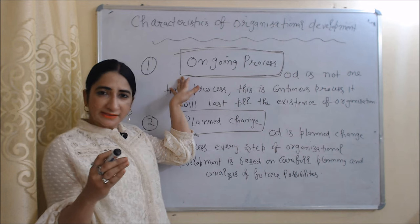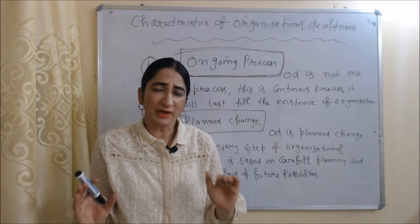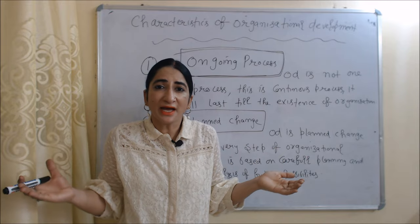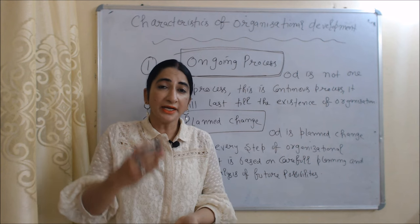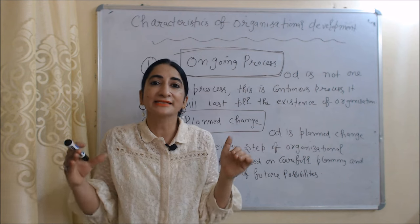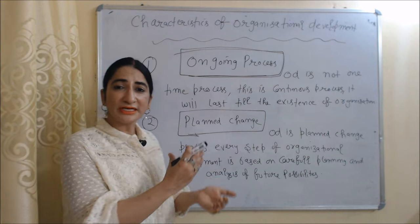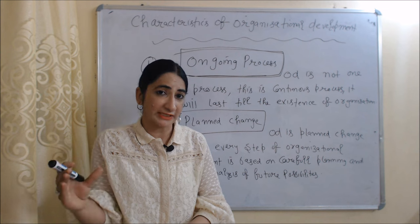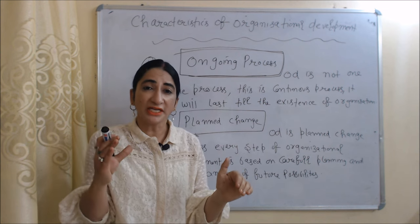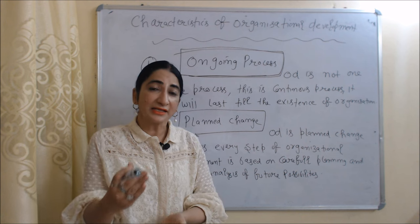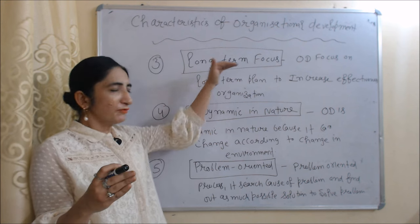The first characteristic of organizational development is that it is an ongoing process — not a one-time task, but a continuous process that lasts until the existence of the organization. The second characteristic is planned change: every step of organizational development is based on careful planning and analysis of future possibilities.